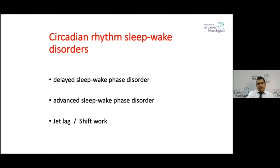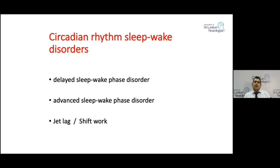Circadian rhythm is a key process that controls our sleep — a self-sustaining biological clock with a periodicity of 24 hours. There can be problems with circadian rhythm that cause sleep problems. Delayed sleep-wake phase disorder is where the patient's natural sleep time is a little delayed — typically their bedtime is around 1 or 2 o'clock in the morning. Their quantity and quality of sleep is normal, but they will wake up naturally a little late, which is problematic if they need to go to work or study.